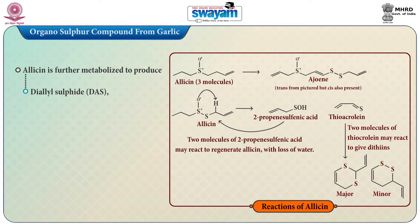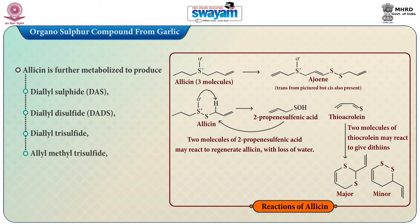Allicin is further metabolized to produce diallyl sulfide (DAS), diallyl disulfide (DADS), diallyl trisulfide, allyl methyl trisulfide, dithiin, and ajoene.